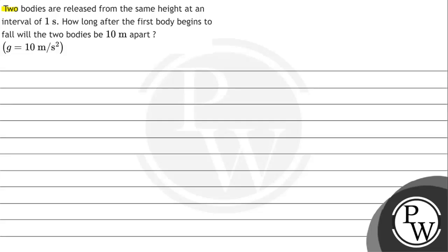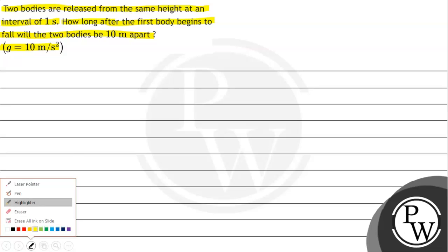Hello, let's get to the given question. The question says two bodies are released from the same height at an interval of one second. How long after the first body begins to fall will the two bodies be 10 meters apart? G equals 10 meters per second squared.